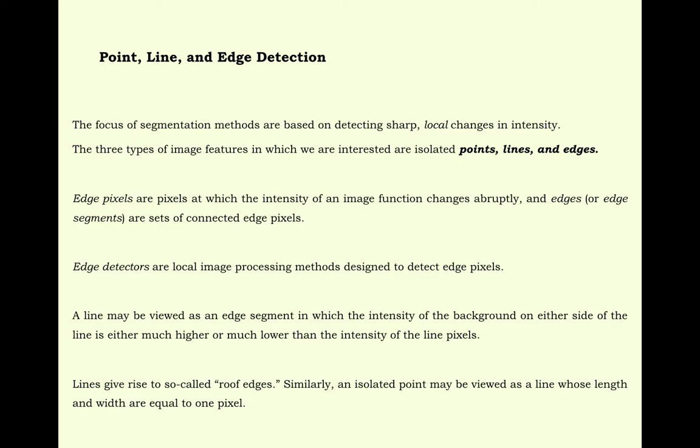Edge detectors are local image processing methods designed to detect edge pixels. A line may be viewed as an edge segment in which the intensity of the background on either side of the line is either much higher or much lower than the intensity of the line pixels. Lines give rise to so-called roof edges. Similarly, an isolated point may be viewed as a line whose length and width are equal to one pixel.